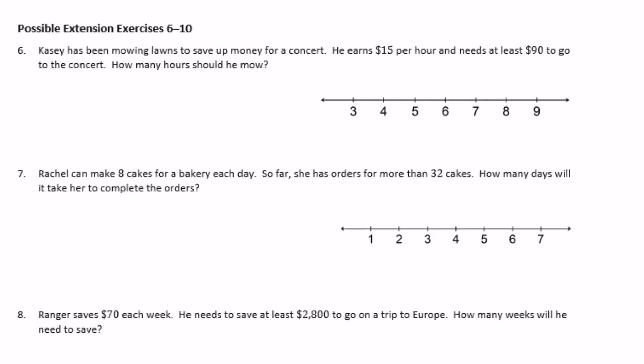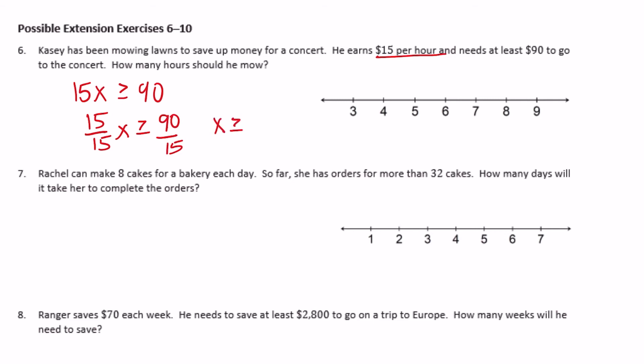Extension exercises: Casey has been mowing lawns to save up money for a concert. He earns $15 per hour and needs at least $90 to go. So 15x is greater than or equal to 90. Dividing both sides by 15 gives x is greater than or equal to 6. He needs to mow for six or more hours. On the graph, circle six, fill it in, and draw the arrow to the right.